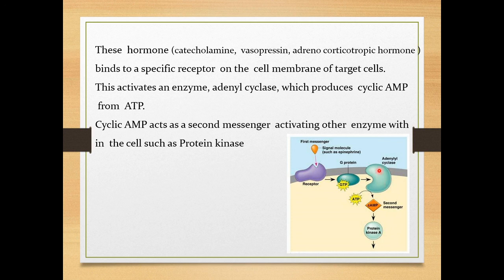Adenylyl cyclase is partly located in the cell membrane and partly inside the cell. This enzyme converts ATP inside the cells into cyclic AMP — this is the second messenger. So: the hormone (first messenger) binds to the receptor, activates a G protein, which stimulates adenylyl cyclase to convert ATP into cyclic AMP (second messenger).